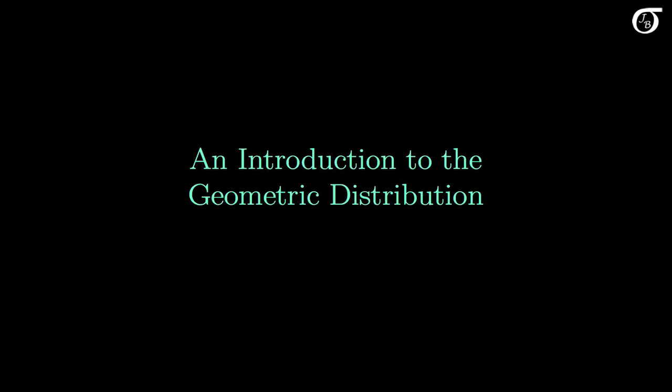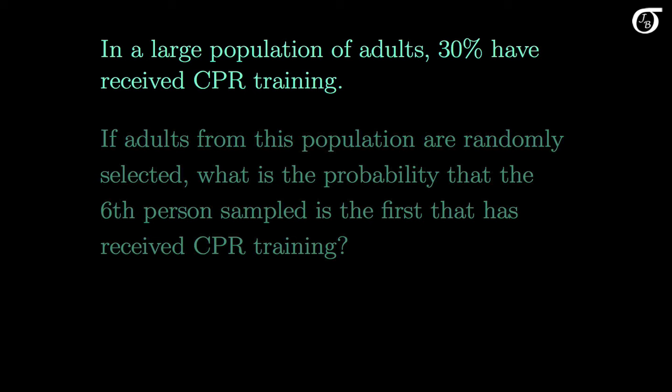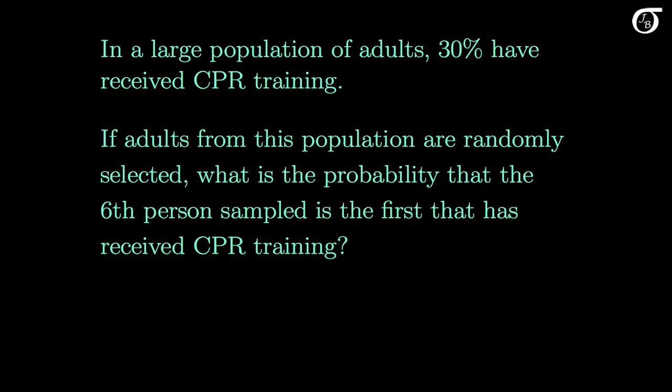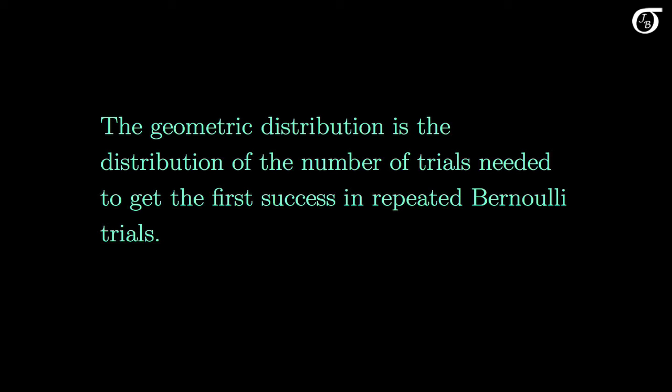Let's look at an introduction to the geometric distribution, a discrete probability distribution. Let's open with an example that we'll come back to later. In a large population of adults, 30% have received CPR training. If adults from this population are randomly selected, what is the probability that the 6th person sampled is the first that has received CPR training? We can use the geometric distribution to calculate this probability. The geometric distribution is the distribution of the number of trials needed to get the first success in repeated independent Bernoulli trials. This can be important, for example, if we're trying to find someone who can perform CPR.